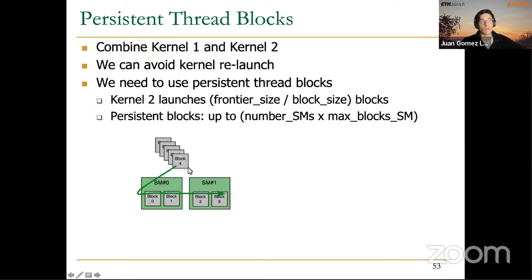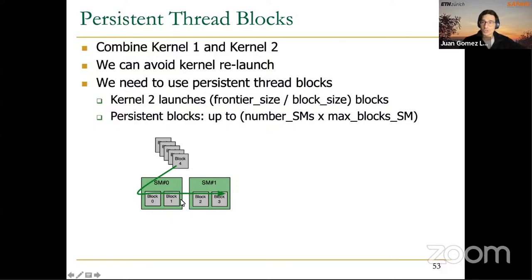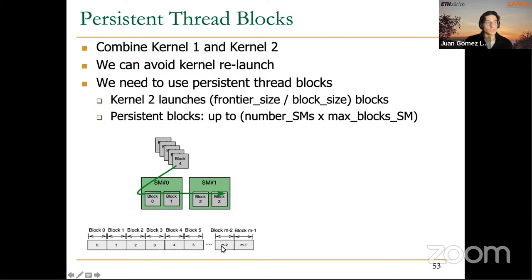When one of these four blocks finishes its computation, it spills its local queue into the global queue and retires, allowing the next block — say block 4, 5, 6, etc. — to occupy that SM slot. The frontier is divided into chunks, each assigned to one thread block. With persistent thread blocks, instead of launching M thread blocks, we only launch the number of thread blocks that can run concurrently on the available cores — in our example, just four thread blocks.